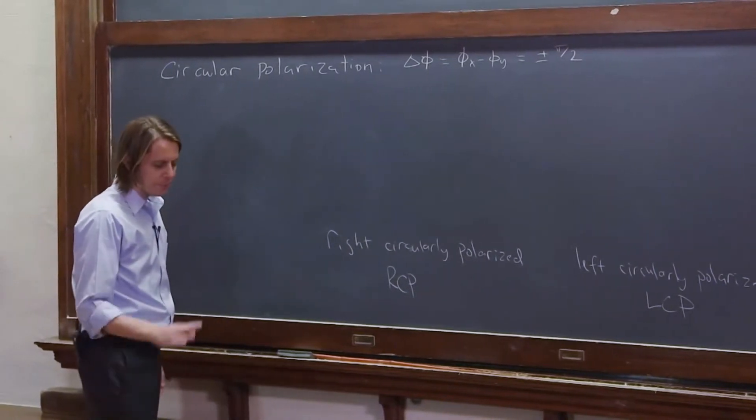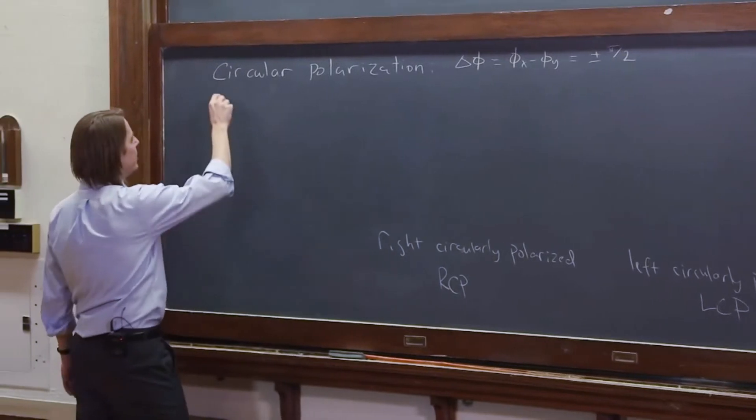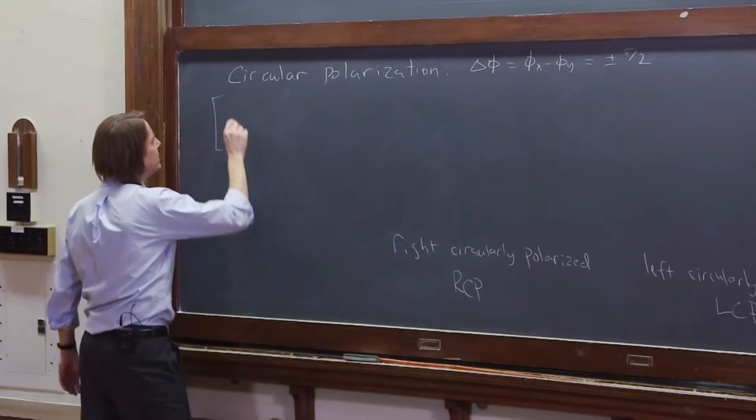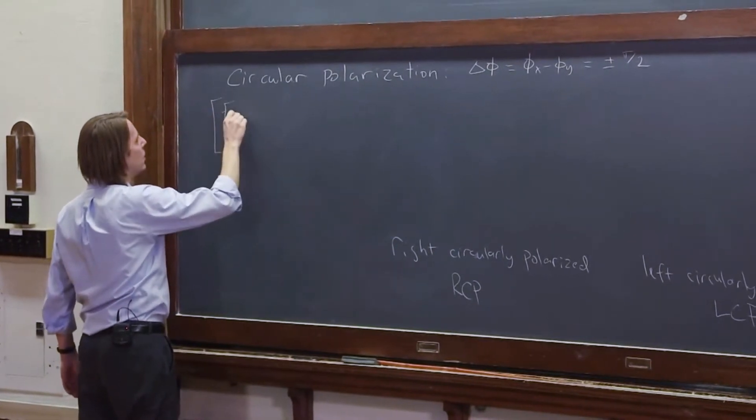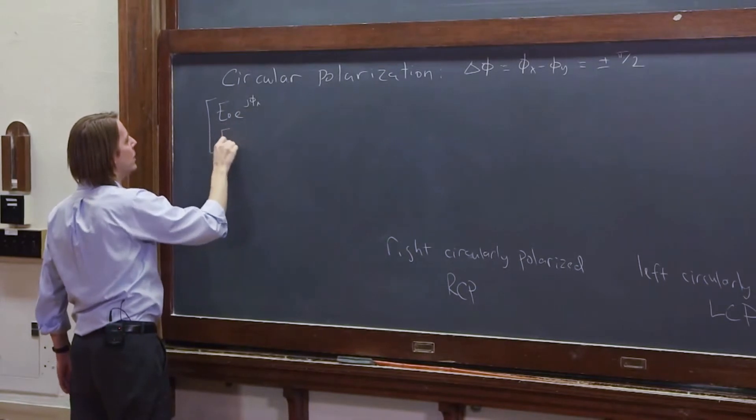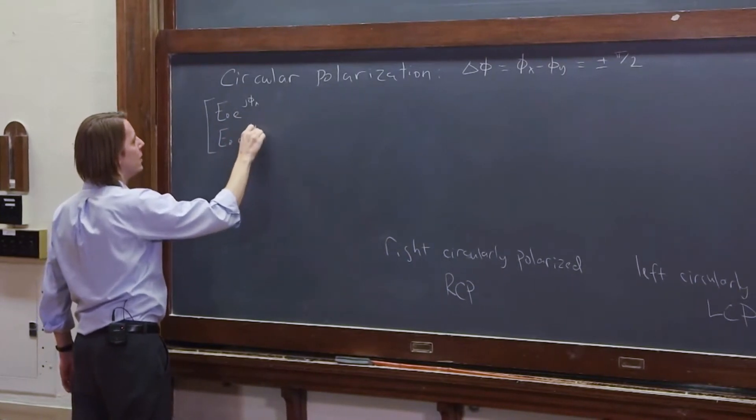So let's first start here and write a nice Jones vector: e0 e to the j phi x over e0 e to the j phi y.